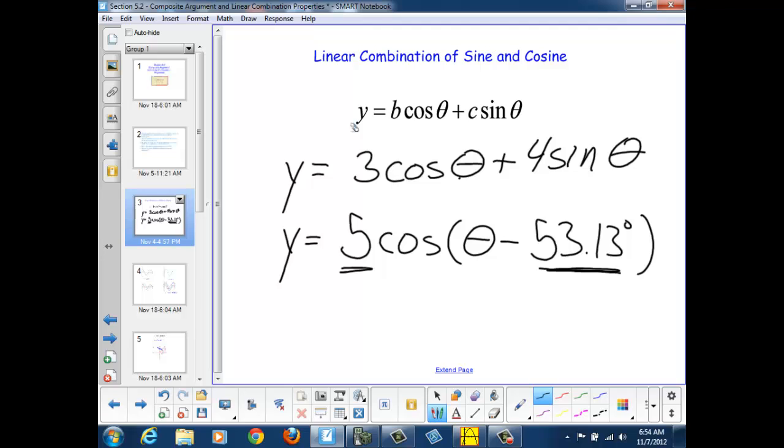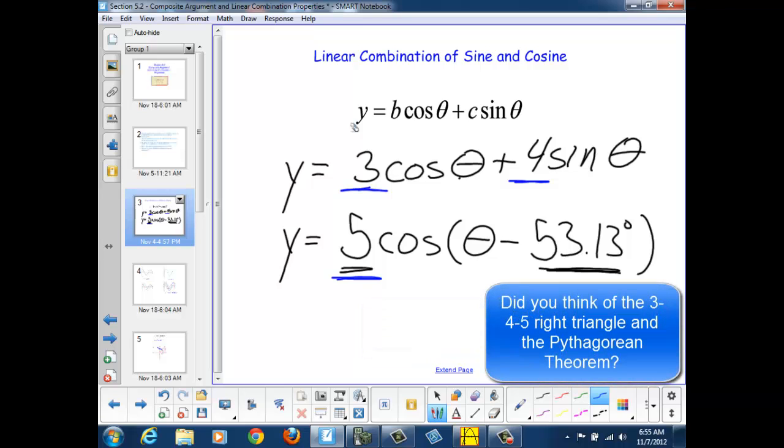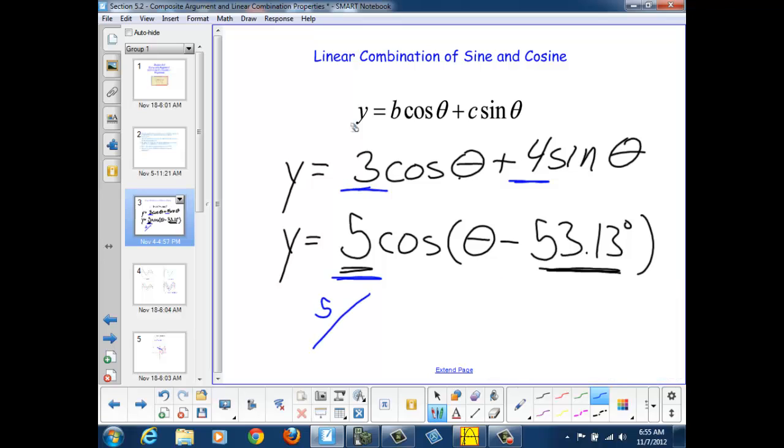Well, the 5 is the amplitude. And if we look at the amplitudes of our original equations, we see that we had an amplitude of 3 and an amplitude of 4, and we ended up with an amplitude of 5. 3, 4, 5. Hopefully this reminds you of a right triangle with an amplitude of 5 and sides of 3 and 4, because 3 squared plus 4 squared equals 5 squared.